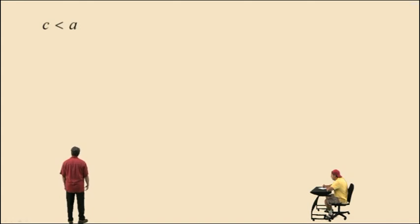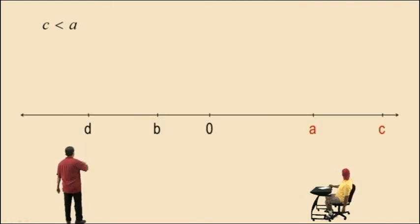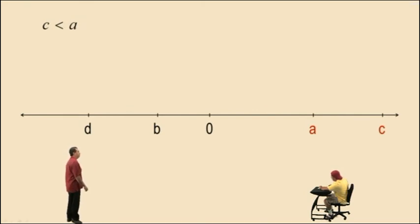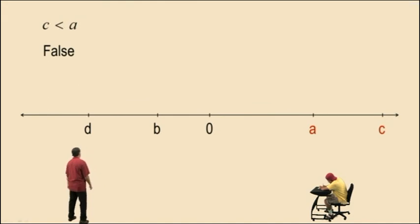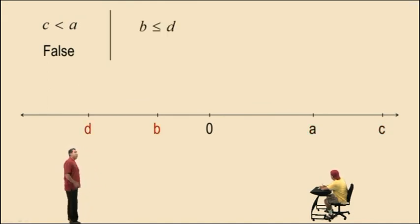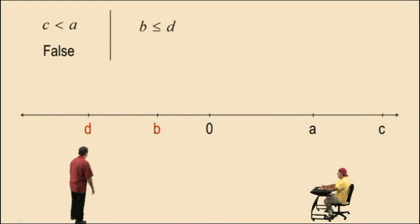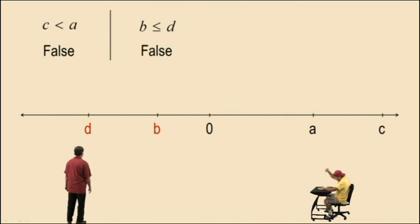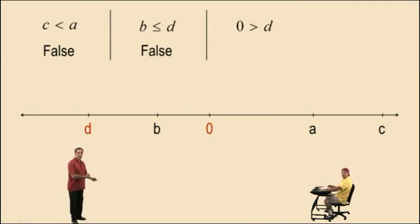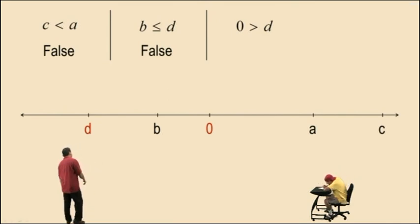Now let's look at these variable terms. C less than A — well, unless you have a number line, you cannot determine what the answer is. So let's have a number line here. Charlie, C is less than A — is this true or false? Is C to the left of A on this number line? Nope. According to the number line, C is actually greater than A, so the statement 'C is less than A' is false. Okay Charlie, B is less than or equal to D — is B to the left of D? Nope. Is B equal to D? Nope, they're not in the same place. So this is again a false statement. Zero greater than D — is zero to the right of D on the number line? Yes, because zero is greater than D, so that is a true statement.